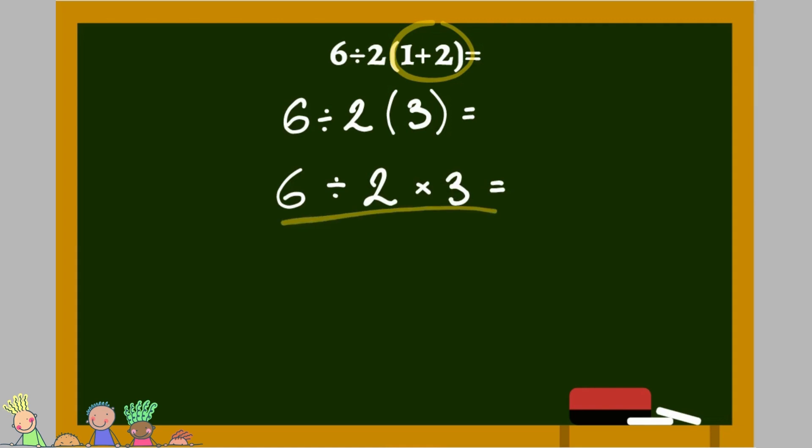We work from left to right, so 6 divided by 2 is 3. And 3 times 3 is 9. So the correct answer to this equation is 9.